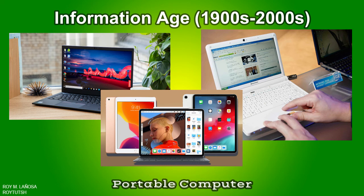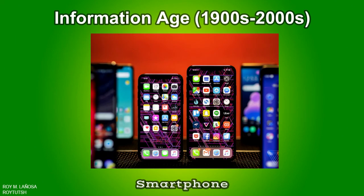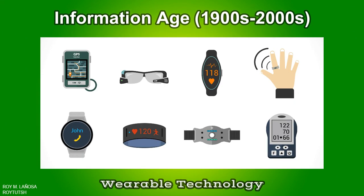A portable computer is a computer designed to be easily moved from one place to another and includes a display and keyboard. A smartphone is a cellular telephone with an integrated computer and other features not originally associated with telephones, such as an operating system, web browsing, and the ability to run software applications. Wearable technology is a category of electronic devices that can be worn as accessories, embedded in clothing, implanted in the user's body, or even tattooed on the skin.